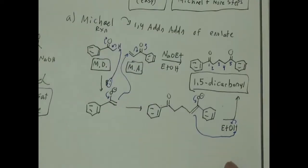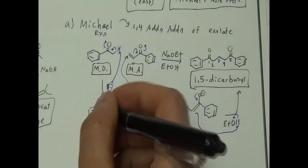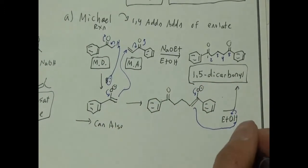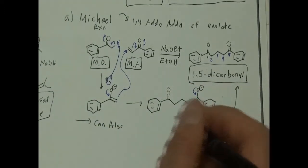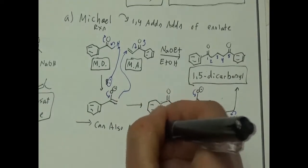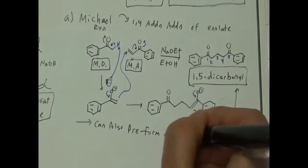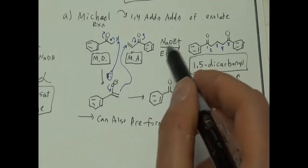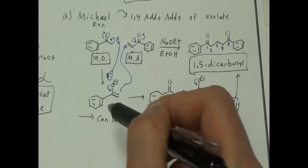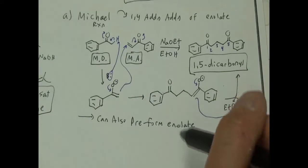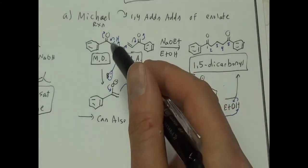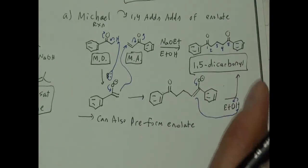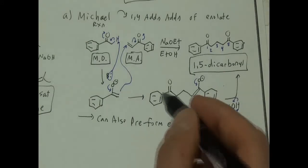Another example: we can also change the reagents slightly and pre-form the enolate. Using sodium ethoxide, it's not a super strong base, so when it makes the enolate it's kind of in equilibrium. But what if we just use a super strong base, rip off that proton and make the enolate? Same result.